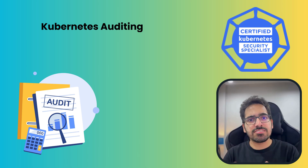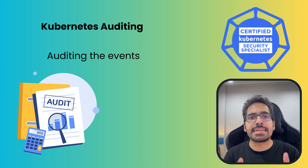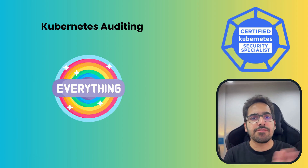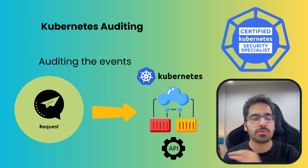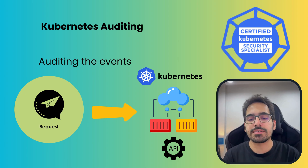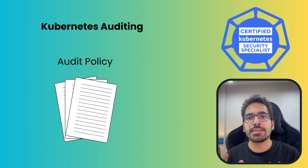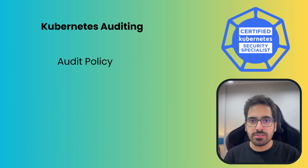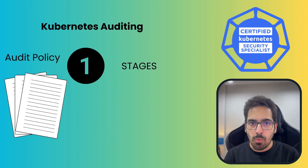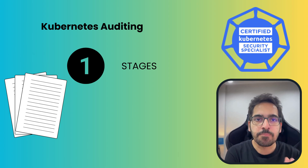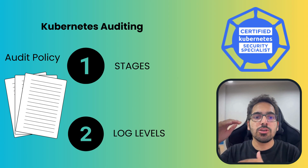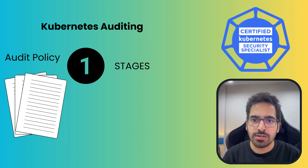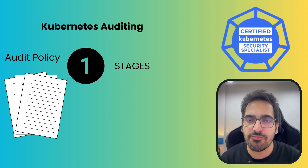As the name suggests, Kubernetes auditing means we are auditing events — auditing everything. As soon as a request goes to the Kubernetes API server, everything gets recorded. There is a file called the audit policy. In that audit policy there are two main things: one is the stages, and the other is the log levels.